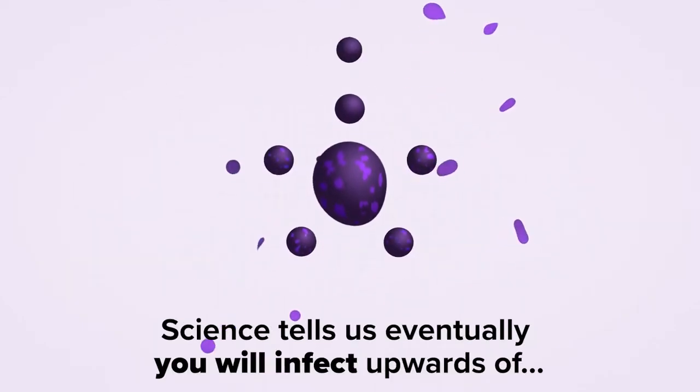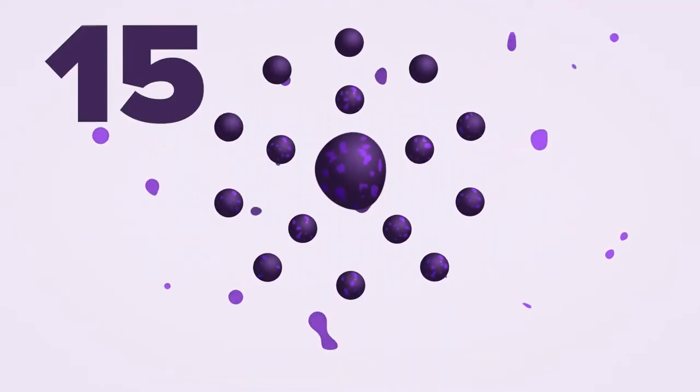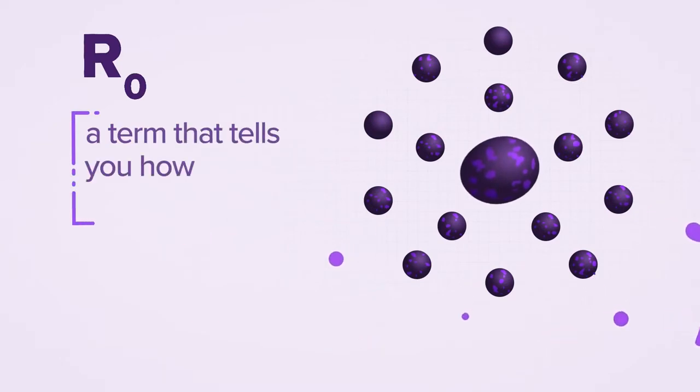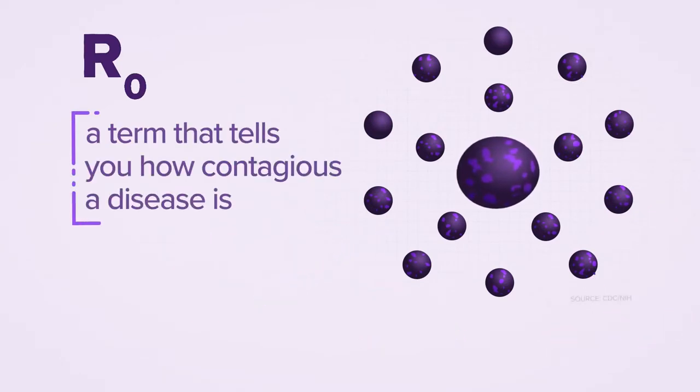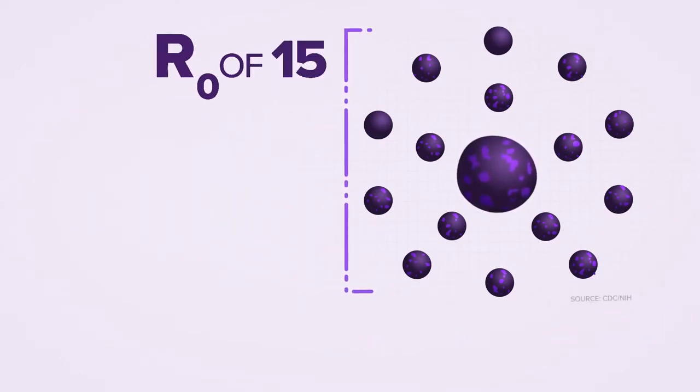Science tells us eventually you will infect upwards of 15 other dots, thanks to something known as an R-naught. Yep, R-naught. A fancy term that tells you how contagious a disease is. The R-naught of measles, around 15.